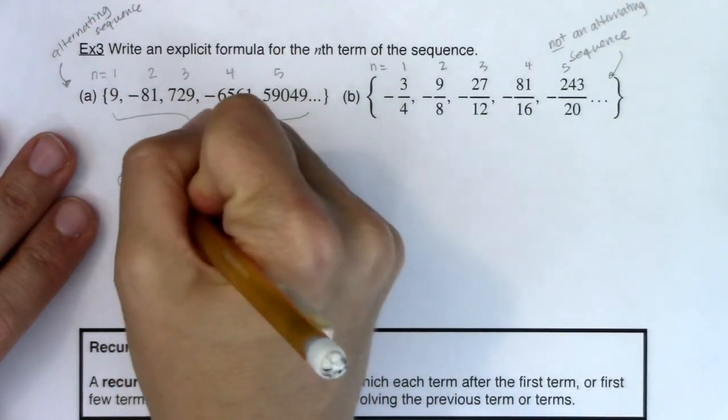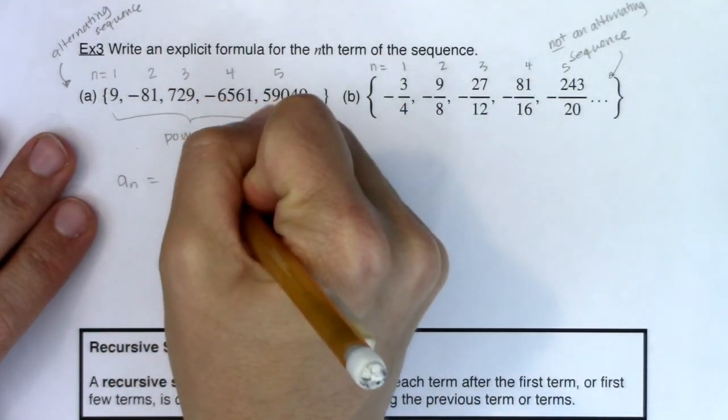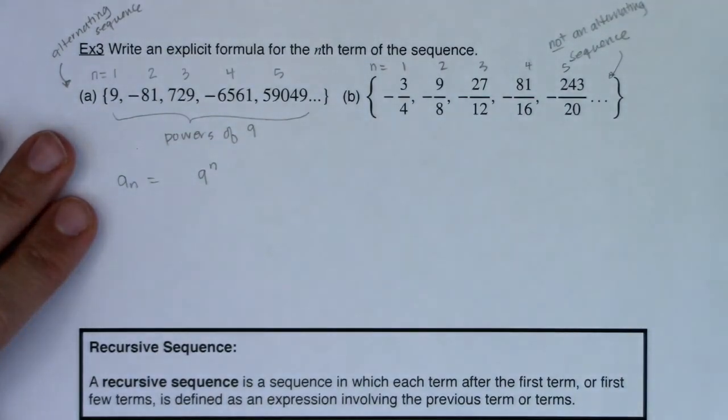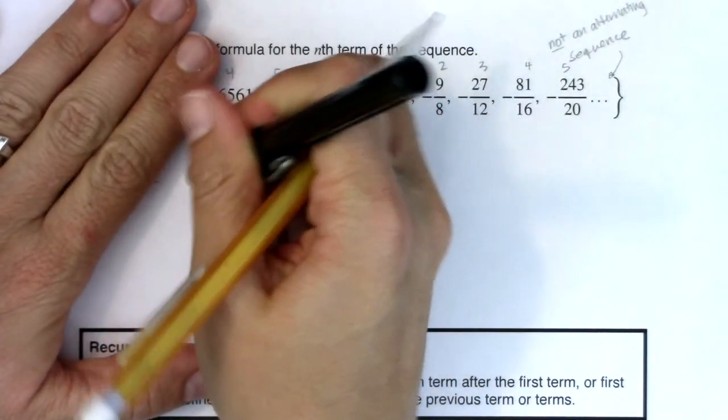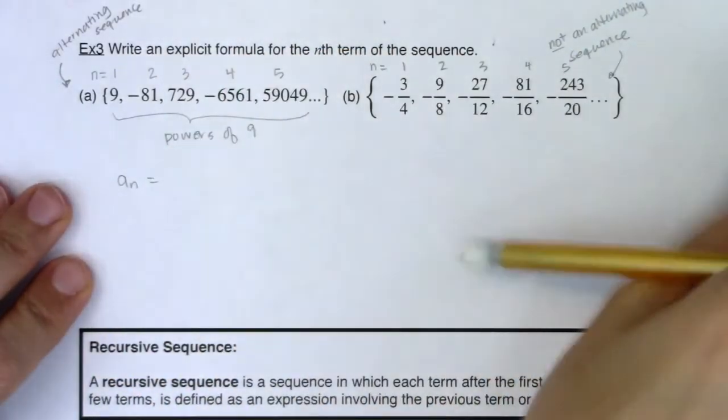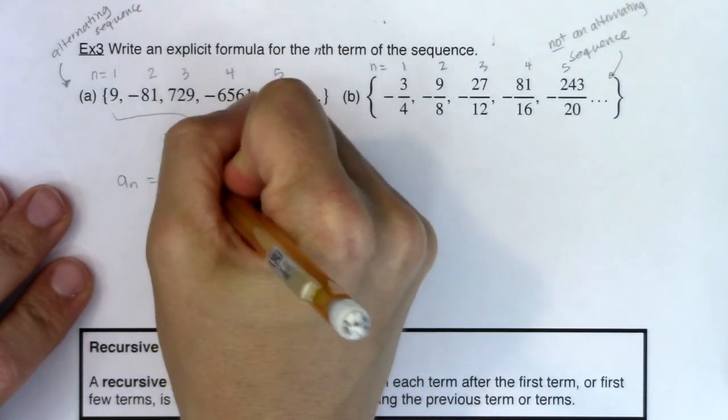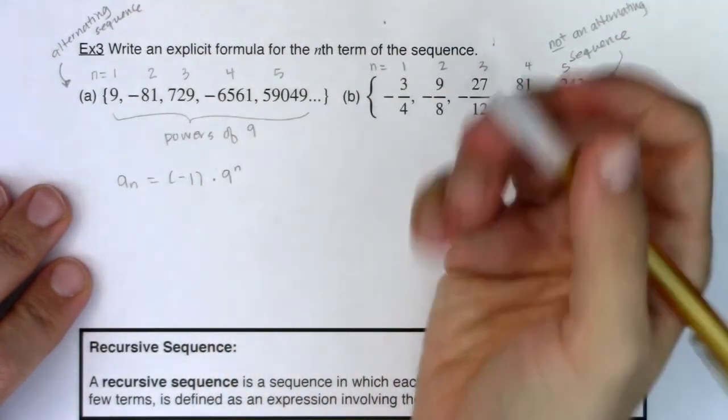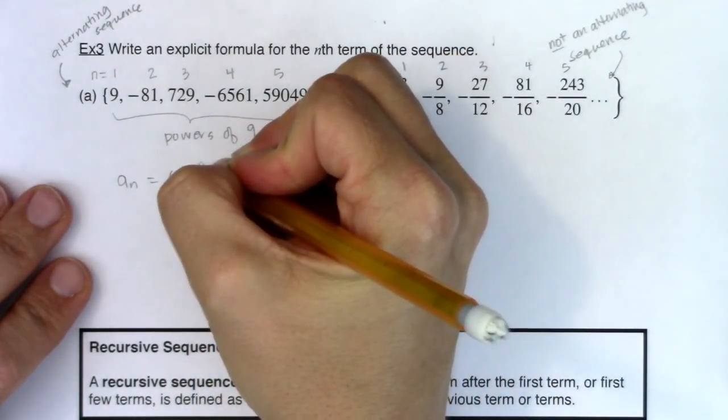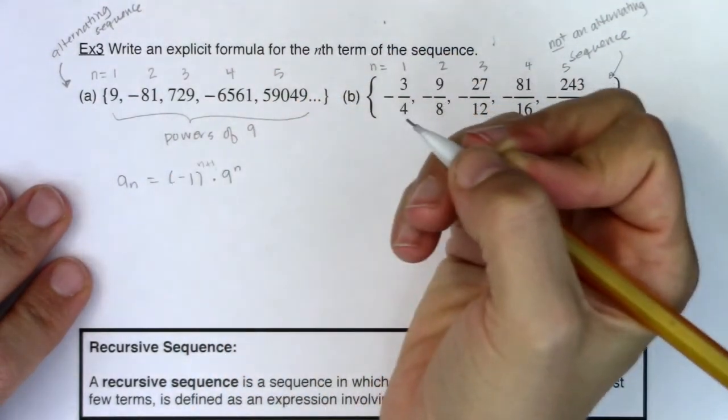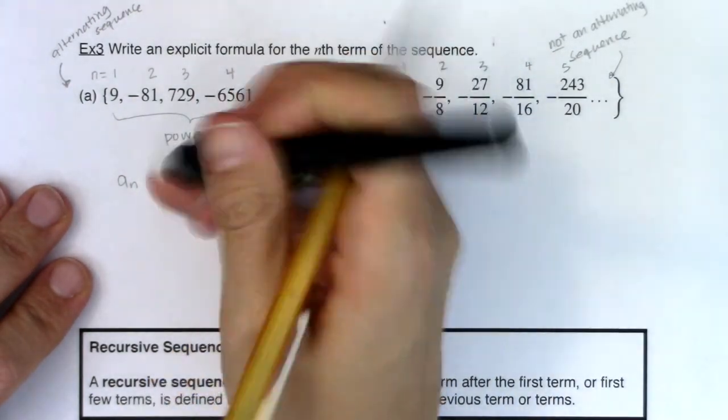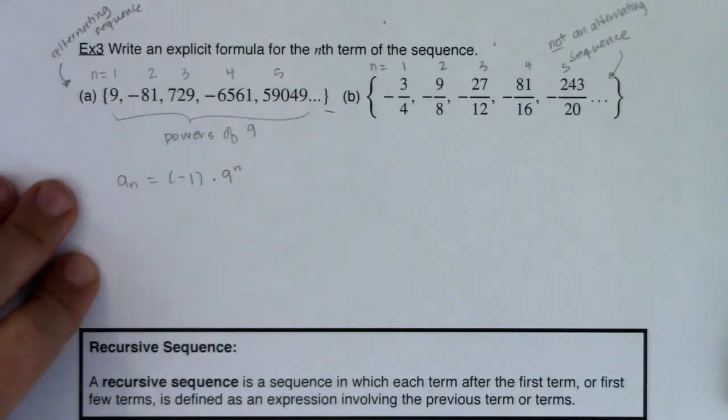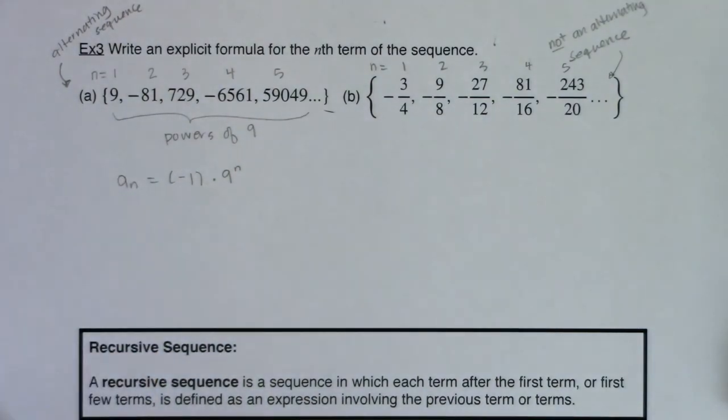So for a sub n, I know I'm going to have at least a 9 to the n term in there, but I also need an alternator. So I have an alternator times 9 to the n, and what I have to decide is do I want an n here or do I want an n plus 1? Those are usually the two options you pick between.